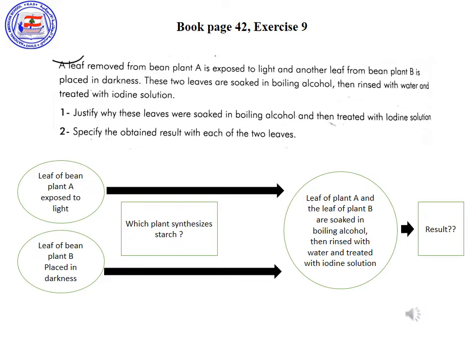Number 2: Specify the obtained result with each of the two leaves. When you are asked to specify, you must indicate and justify. First, indicate the result after applying iodine solution — it can be either a positive result or a negative result — and then justify.